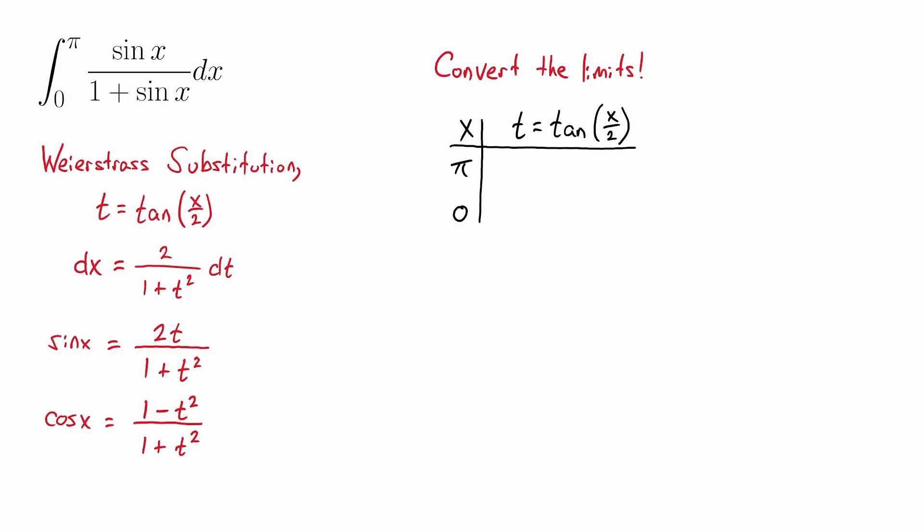To do this, all we're going to do is plug in our limits x equals 0 and x equals π into our Weierstrass substitution, which is t equals tangent of x over 2. Let's do the easy one first, plugging in x is 0. So if we do that to our Weierstrass substitution, we're going to get tangent of 0, which you all know is 0.